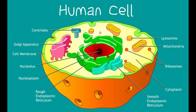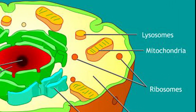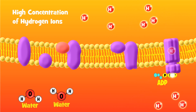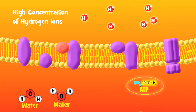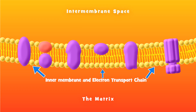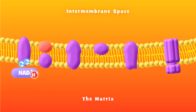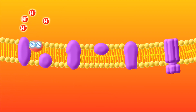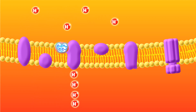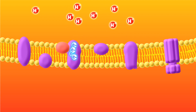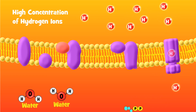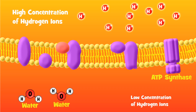In our cells we have organelles. You have likely heard of one called mitochondria. Primarily these organelles are responsible for the generation of ATP. The way ATP is generated is through the generation of a proton motive force — essentially a high concentration of protons, hydrogen ions, in the space between the membranes of this organelle. When these protons move down their concentration gradient out of this intermembrane space, they go through a protein called ATP synthase. The movement of protons through this protein facilitates the generation of ATP, the energy source of the cell.